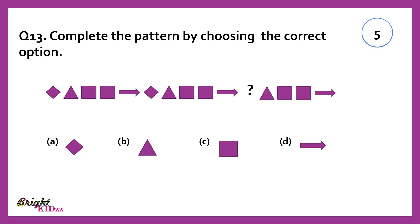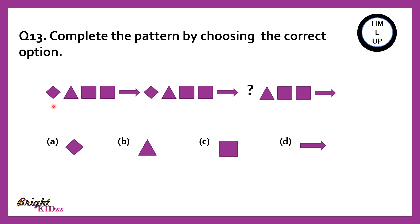Complete the pattern by choosing the correct option. The pattern is: rhomboid, triangle, square, square, square, arrow. Rhomboid, triangle, square, square, arrow. So the next is rhomboid diamond.